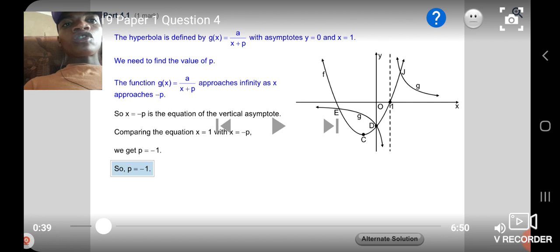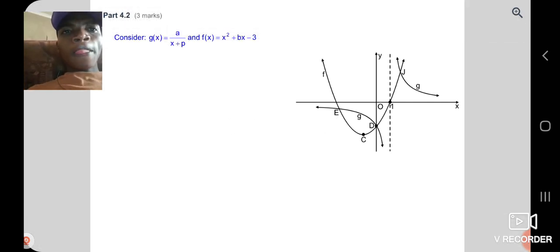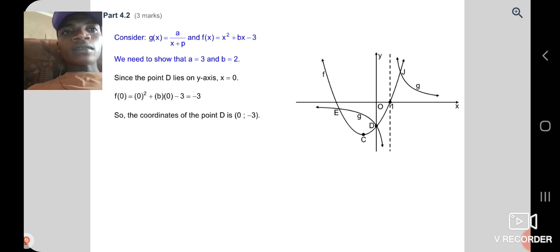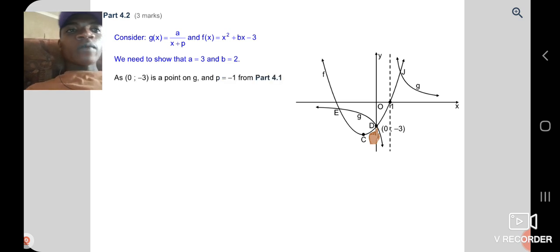Question 4.2. Consider the graph g(x) = a/(x + p) and f(x) = x² + bx - 3. We need to show that a = 3 and b = 2. We have a point of D. We are taking that point to find that a. And b is a point of intersection of that two graph. We put -3 on the y and we put our 1 that we find in the question, we cross multiply. We find 3.